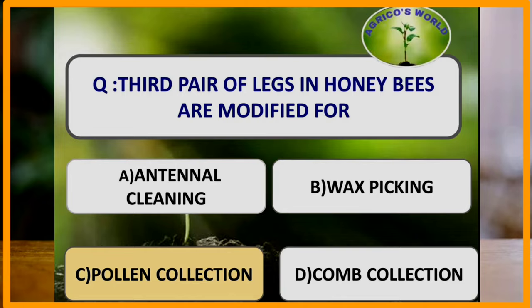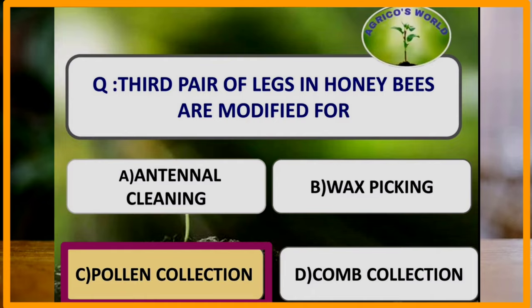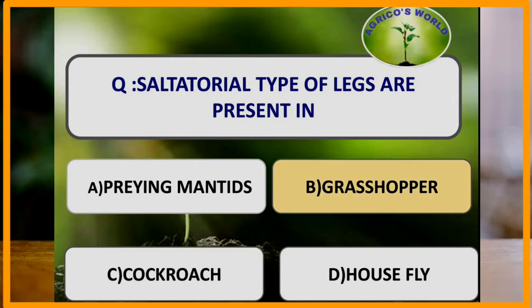The third pair of legs in honeybees are modified for which function? The third pair of legs in honeybees are modified for pollen collection. The hind legs of honeybees consist of a pollen basket and a brush. These are used for collecting pollen. In the hind legs, the inner surface of the large tibia has a groove and is used as a pollen basket or corbicula for the temporary storage of pollen grains.